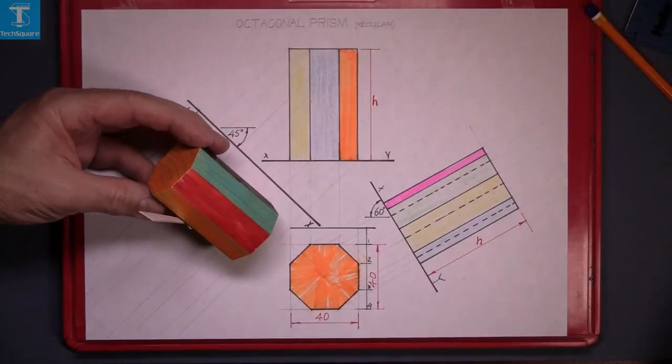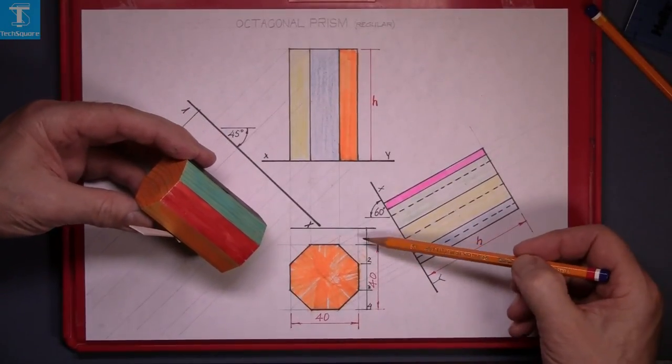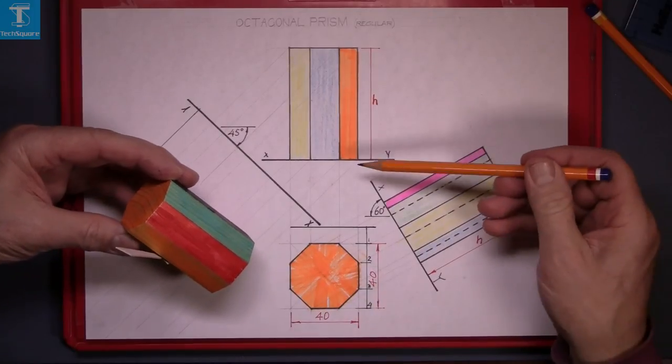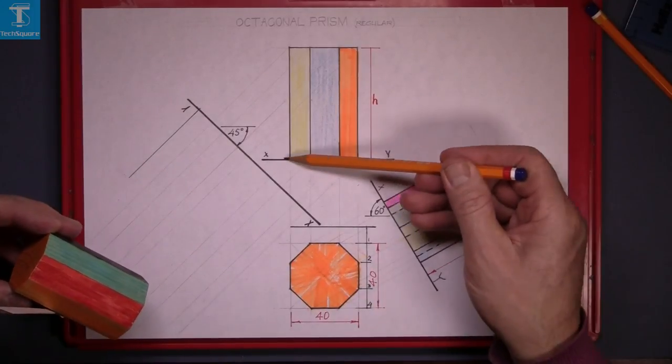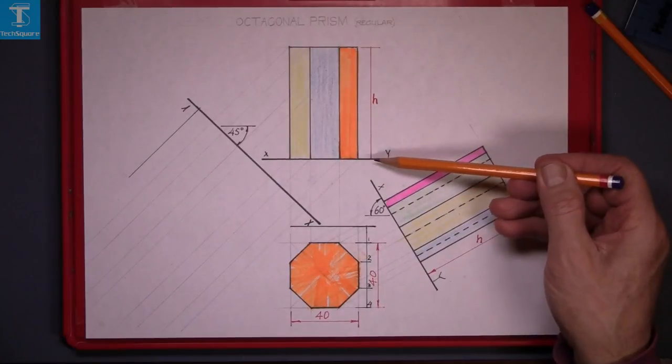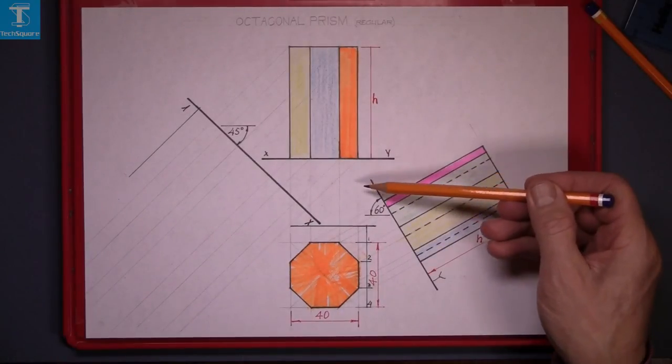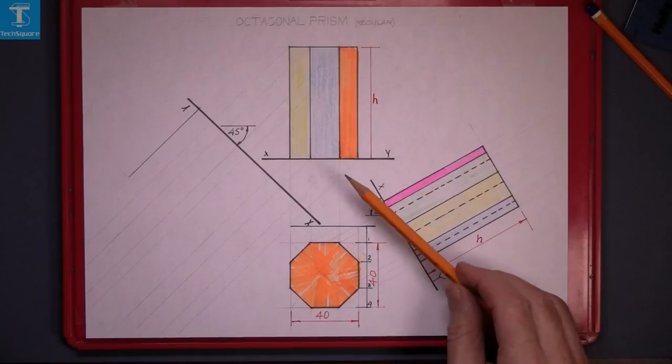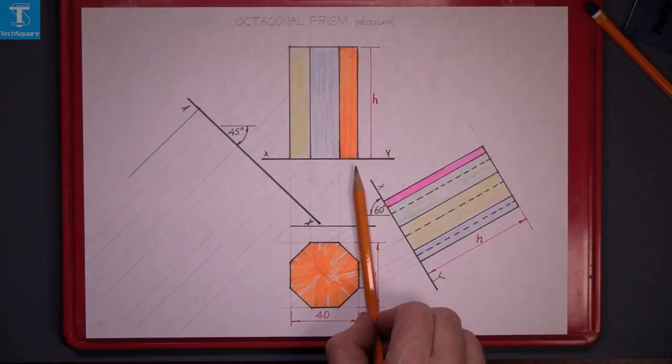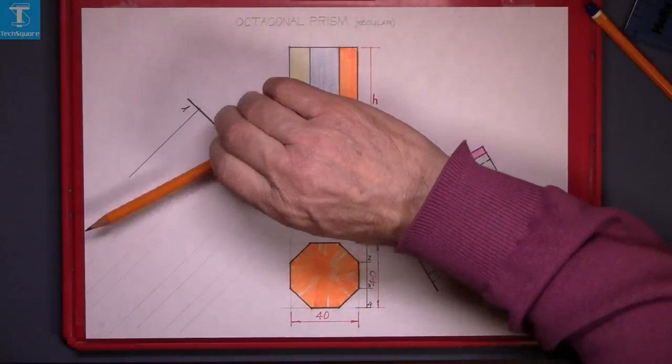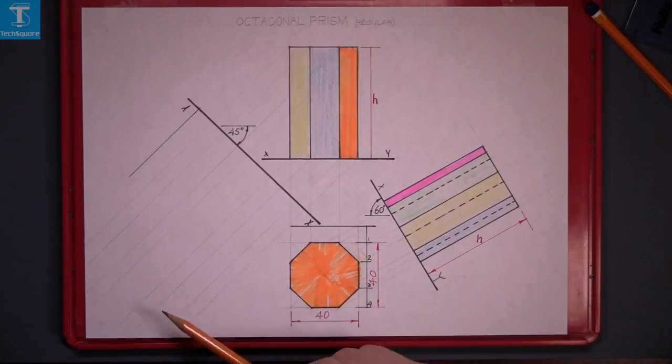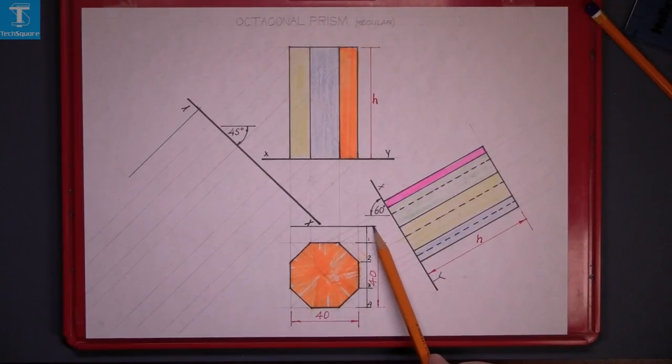For us to find this now, we have to take the distances in the plan. Now we can take the distances from the XY line, but that's what we have done before. But if we take that distance there and mark it out here, we'll be very far out on the sheet.